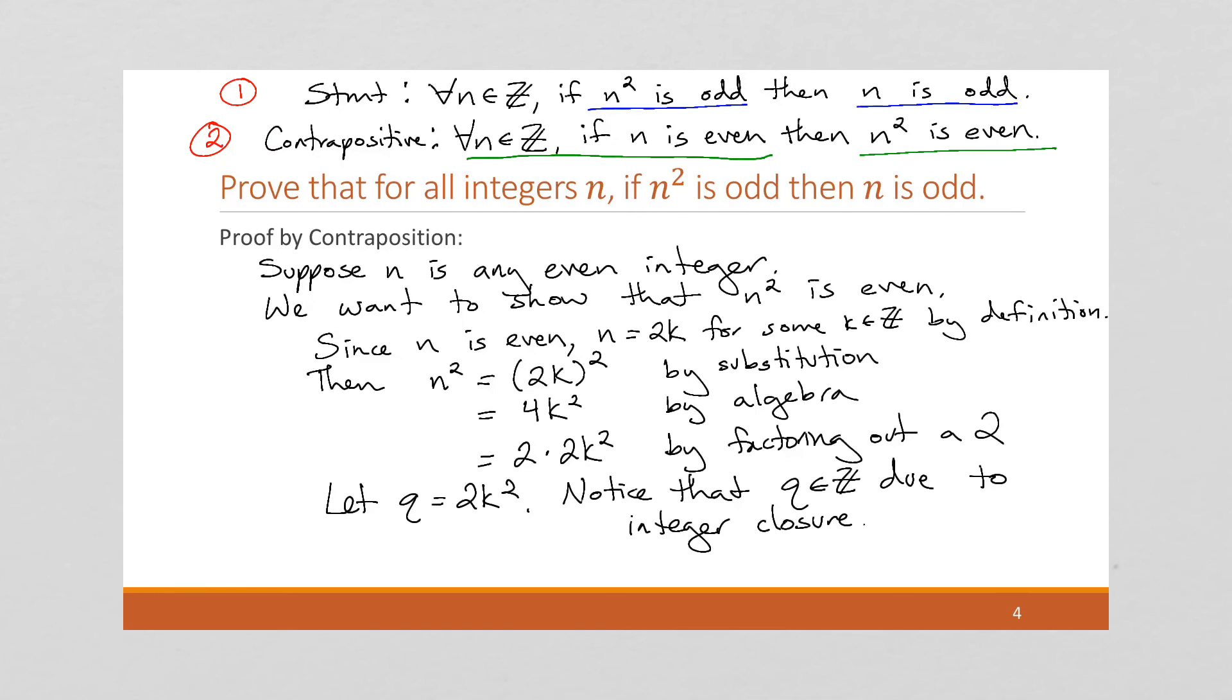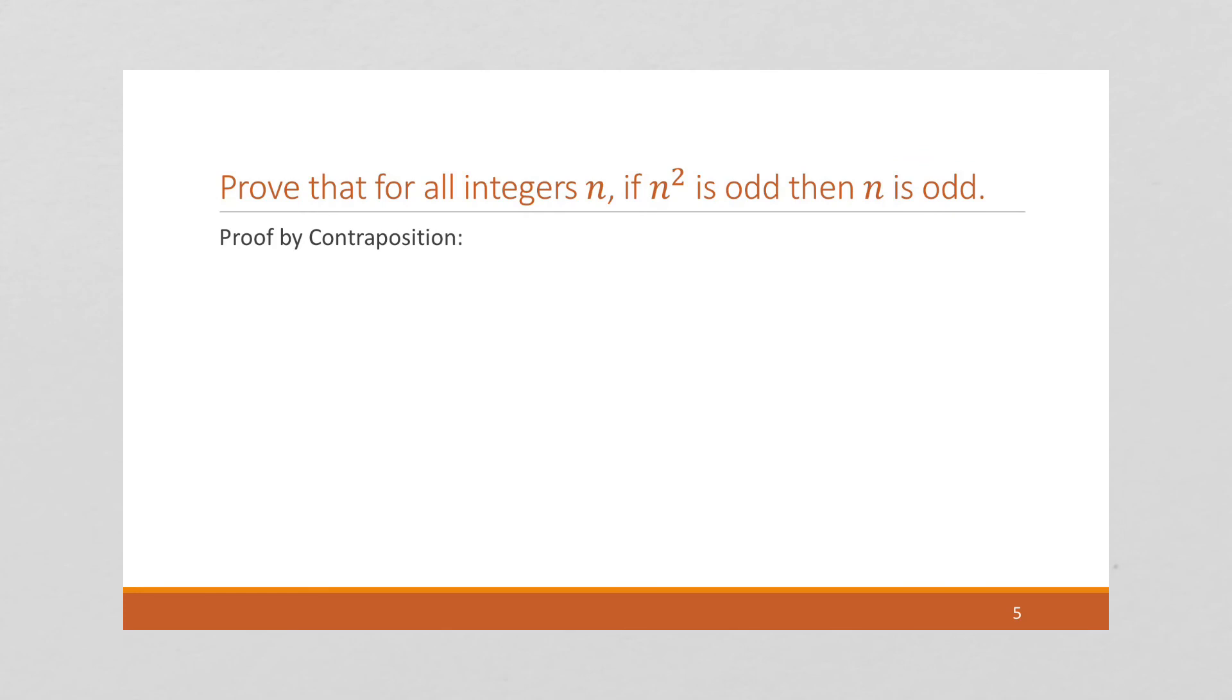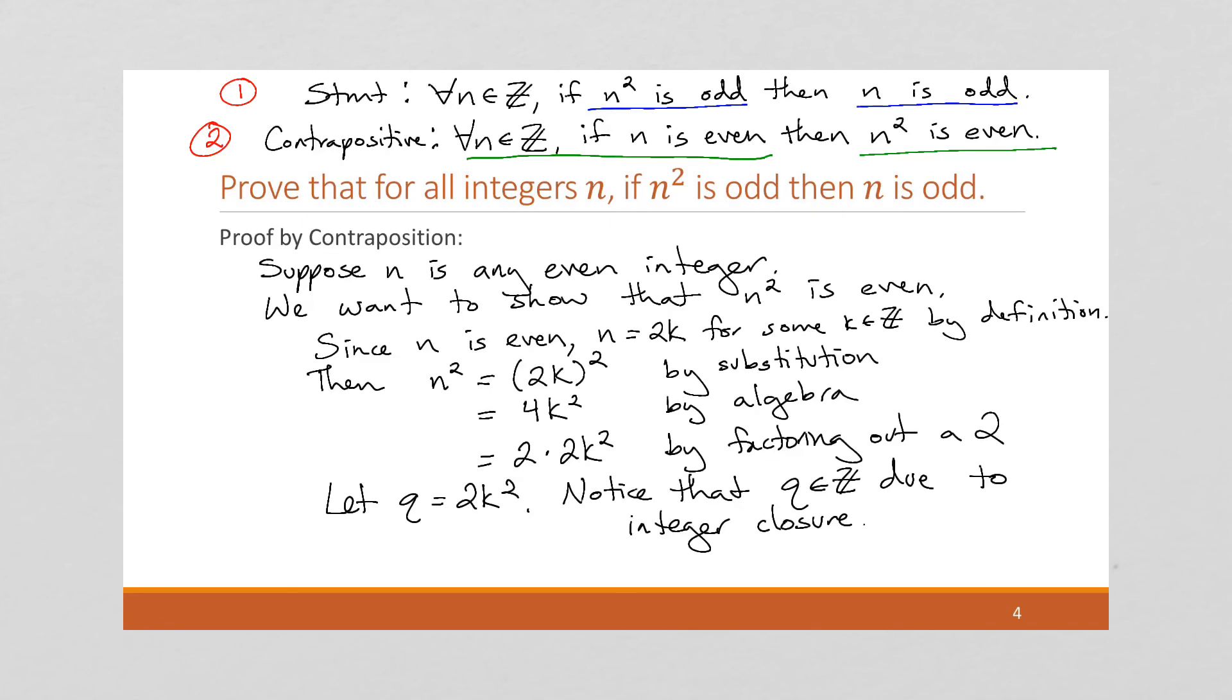So n² is going to equal 2q, where q is an integer, which is even by definition. And that's exactly what we were trying to prove in our proof, which was to be shown.